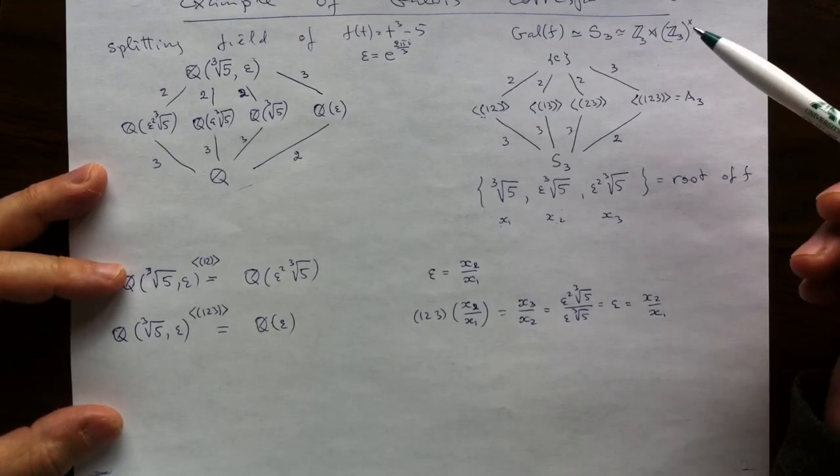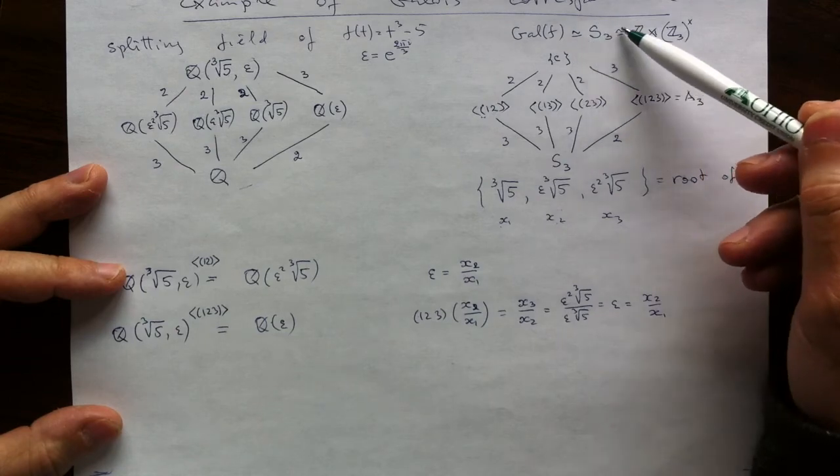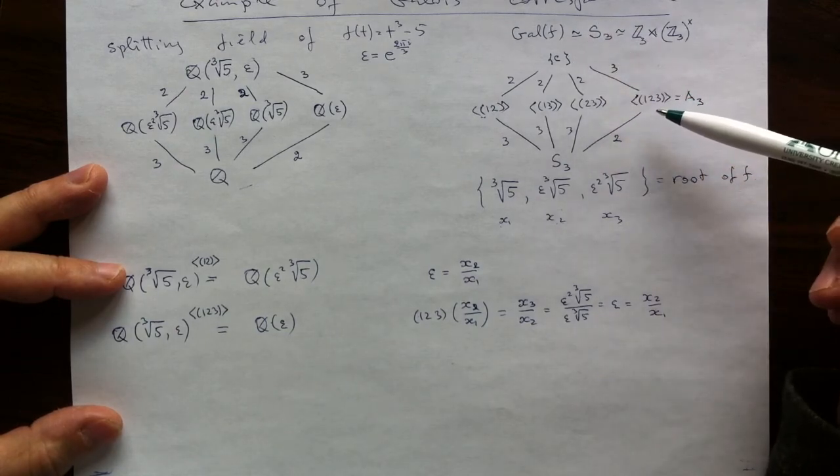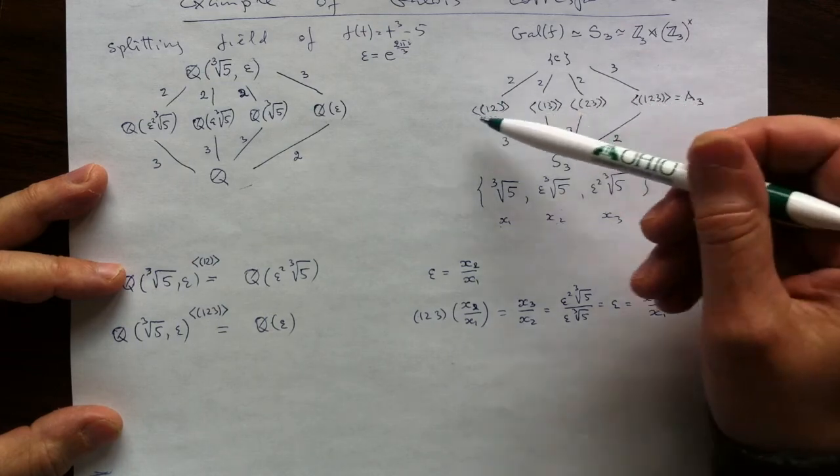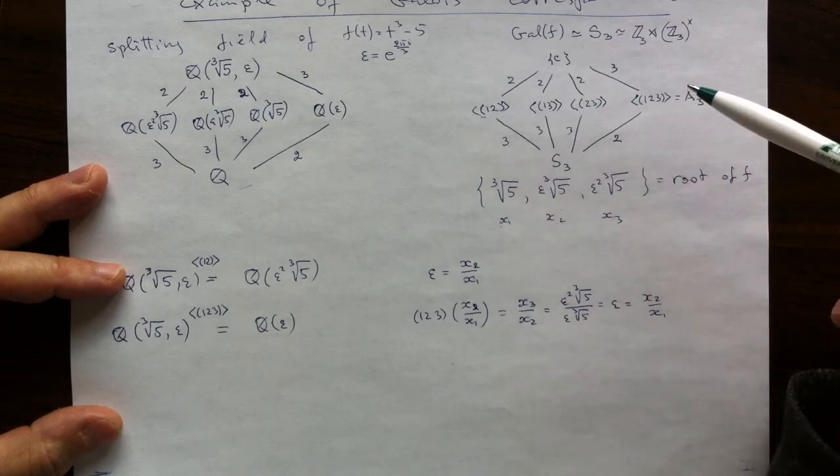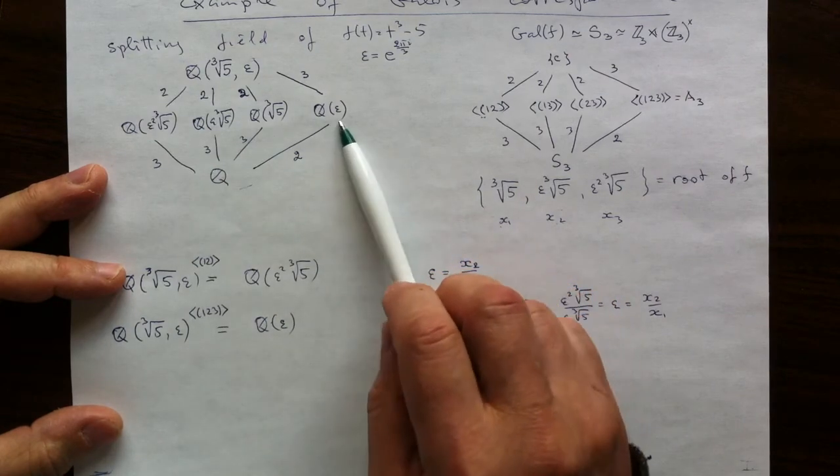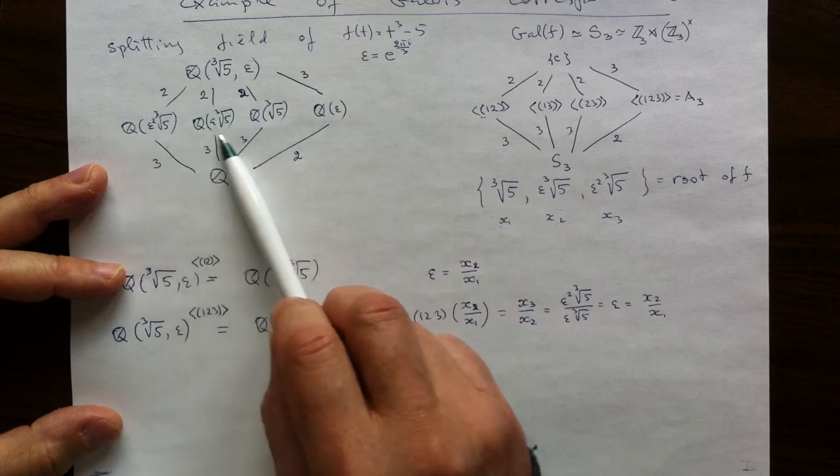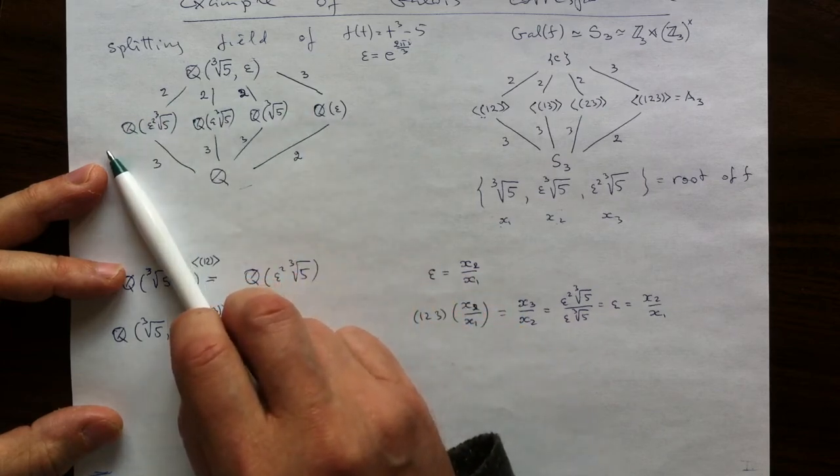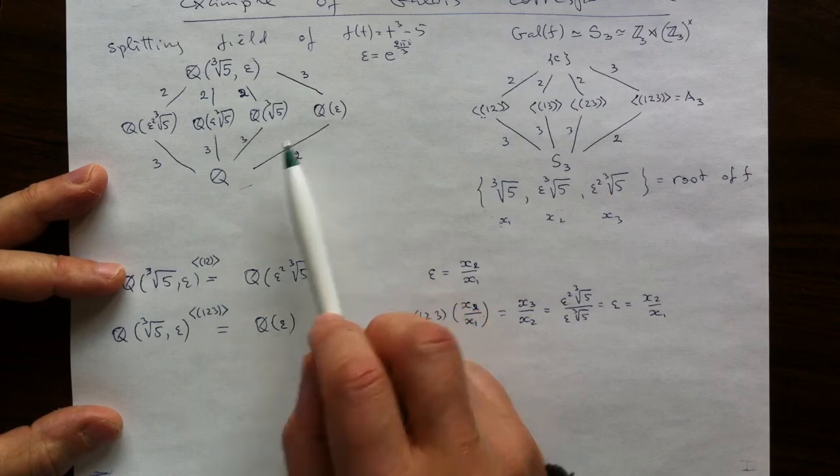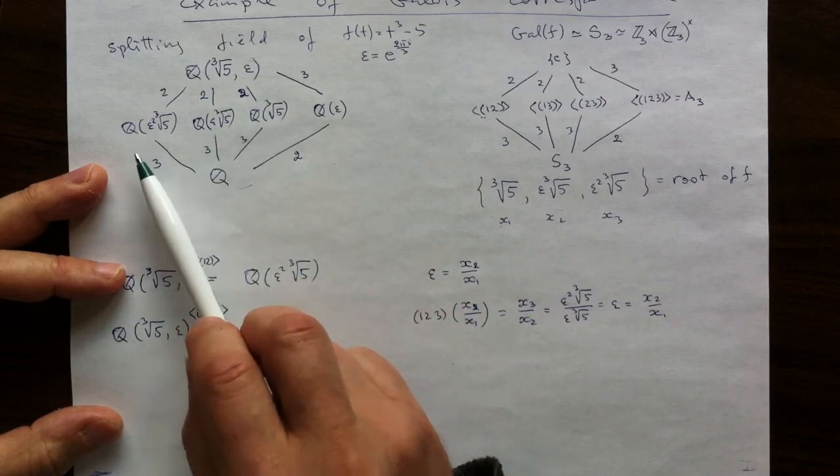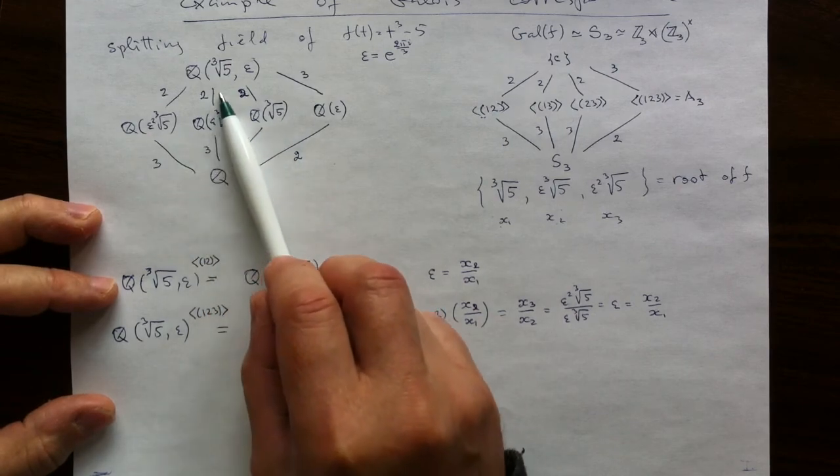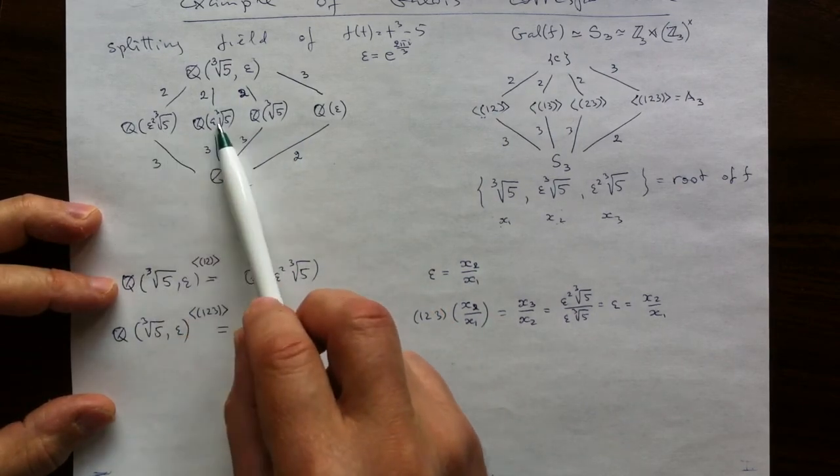So the last remark for this example is now the symmetry group is non-abelian and we have an interesting behavior. So we have one normal subgroup and the rest of the groups are not normal. And then we have the corresponding subfields in the splitting field. And this extension is Galois and these extensions are not. And they are really the same field sitting in three different ways inside of a splitting field.